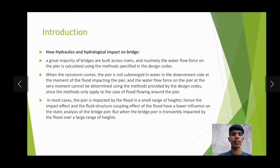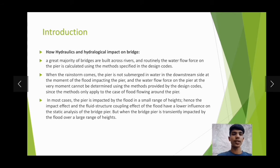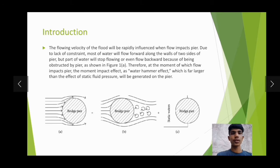Since the method only applies to the case of fluid flowing around the pier, in most cases the pier impacted by the fluid is over a small range of height. Hence the fluid-structure coupling effect has a low influence on the static analysis of the bridge pier. But when the bridge pier is transiently impacted by the fluid over a large range of height, the flow velocity of fluid will be rapidly influenced when the flow impacts the pier due to lack of constraint.